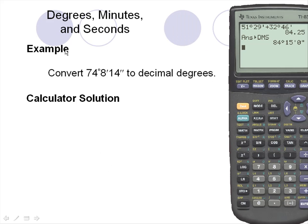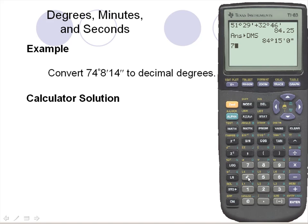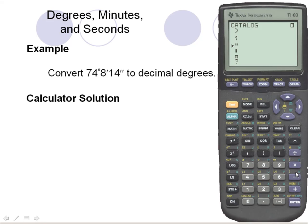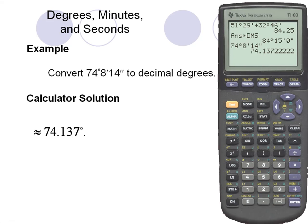Let's take a look at the calculator solution. We'll enter 74 degrees, 8 minutes, and 14 seconds into our calculator. I'll go into the angle section for the degree symbol, then put in 8 minutes using the angle section's second option. For 14 seconds, the seconds symbol is located in the catalog — I'll hit 2nd and 0 to open the catalog and scroll up to find seconds. Hitting enter, we see that 74 degrees, 8 minutes, and 14 seconds rounds to 74.137 degrees.